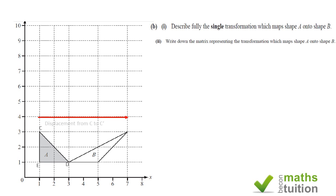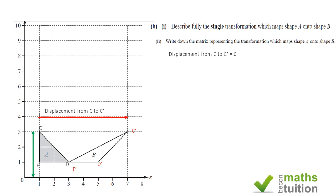To confirm this is a shear: the displacement from C to C' is 6 units (counting across). This displacement is a vector with direction and magnitude. The y-coordinate of C — its perpendicular distance from the x-axis — is 3. Therefore the shear factor = displacement ÷ distance = 6 ÷ 3 = 2.